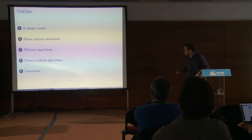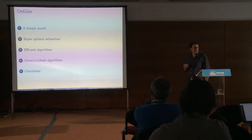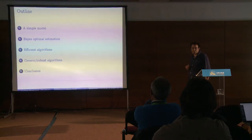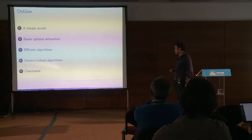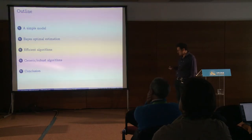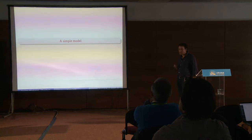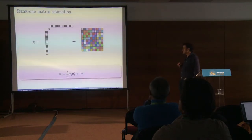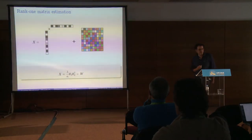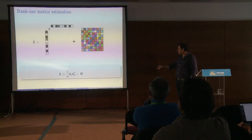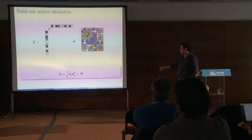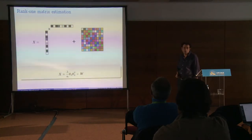Here is the plan of the talk. I'll focus on one simple example on which most things have been proved. It's not a particularly important example for applications, but I think it's good pedagogically. I'll discuss what is Bayes optimal estimation in this case, what are efficient algorithms, and then something about generic or robust algorithms. The simplest possible model: you have an unknown n-dimensional vector theta zero, and what you observe is theta zero times theta zero transpose plus noise. So you observe a rank-one matrix plus noise, and your objective is to estimate this rank-one matrix.